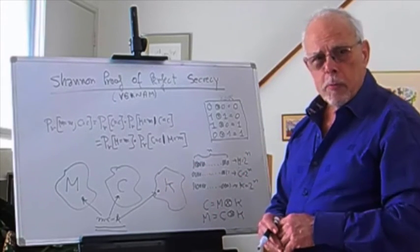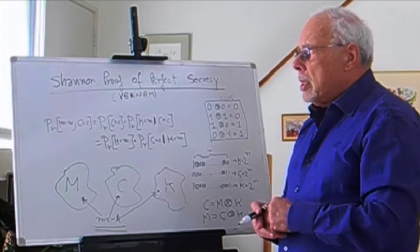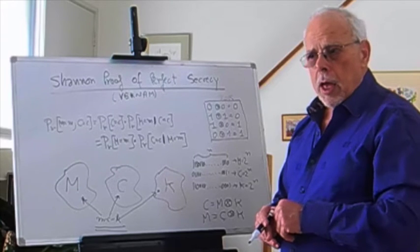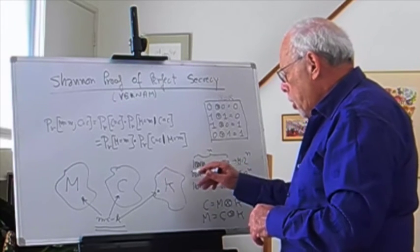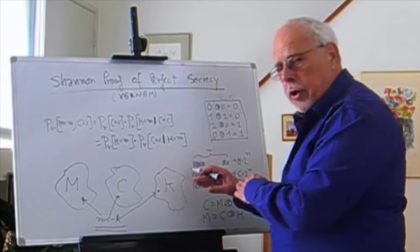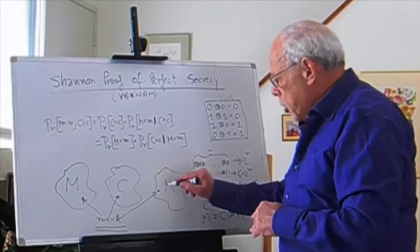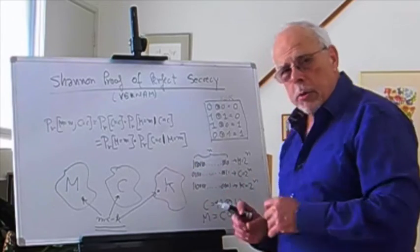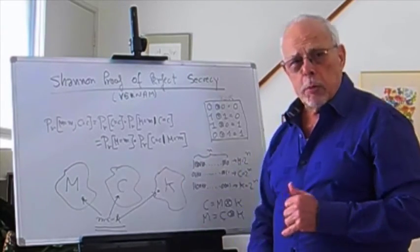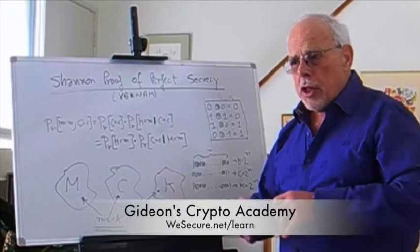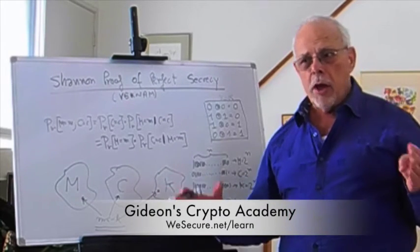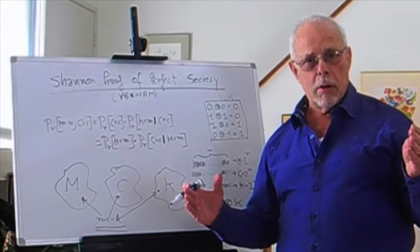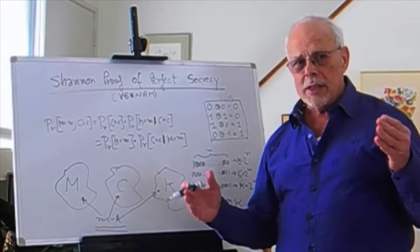The proof will tell us something very important: if you don't do what Vernam did and you decide to go with a key space—the number of possible keys—smaller than the number of possible messages, then you cannot get perfect secrecy. Then it is breakable.